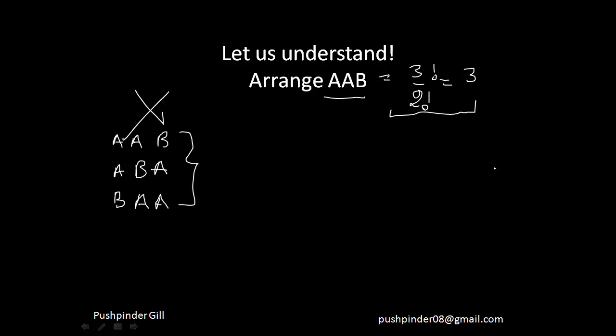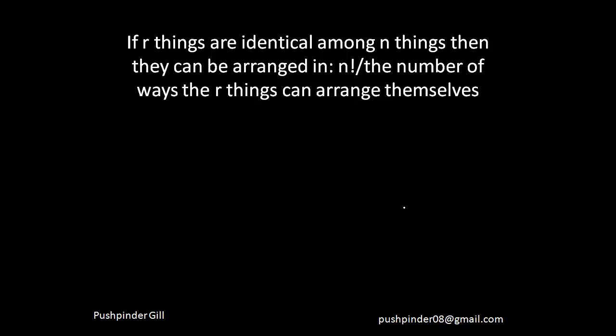You would have seen such questions. But what happens is the scope of this concept does not necessarily lie only in arranging words — the scope goes beyond it. So remember: if r things are identical among n things, they can be arranged in n factorial divided by the number of ways those r things can arrange themselves. Let's do some questions on this point.